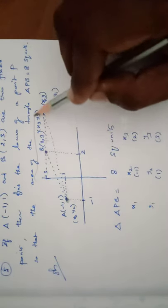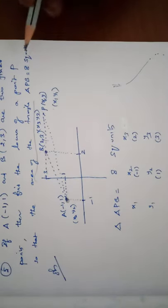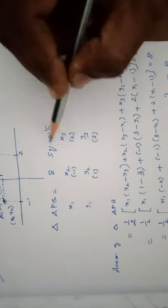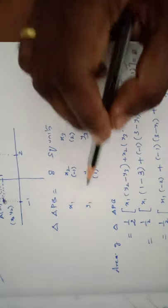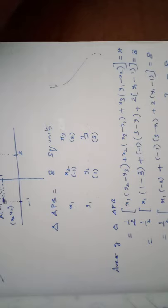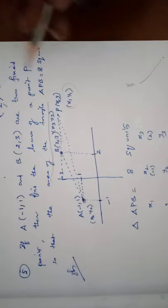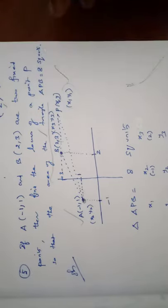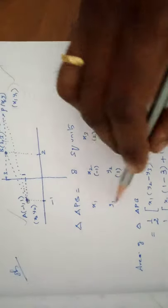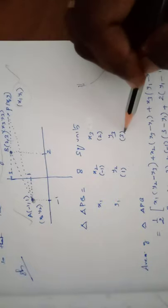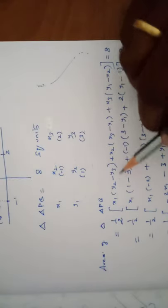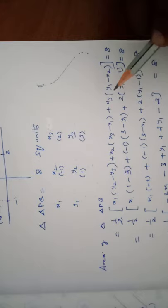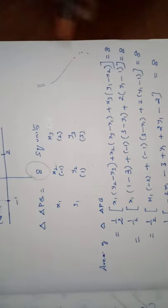Applying the area of triangle formula: area of APB equals 8 square units. Taking P as (x1, y1), A as (x2, y2) = (-1, 1) and B as (x3, y3) = (2, 3). The formula is: half times [x1(y2 minus y3) plus x2(y3 minus y1) plus x3(y1 minus y2)] equals 8.